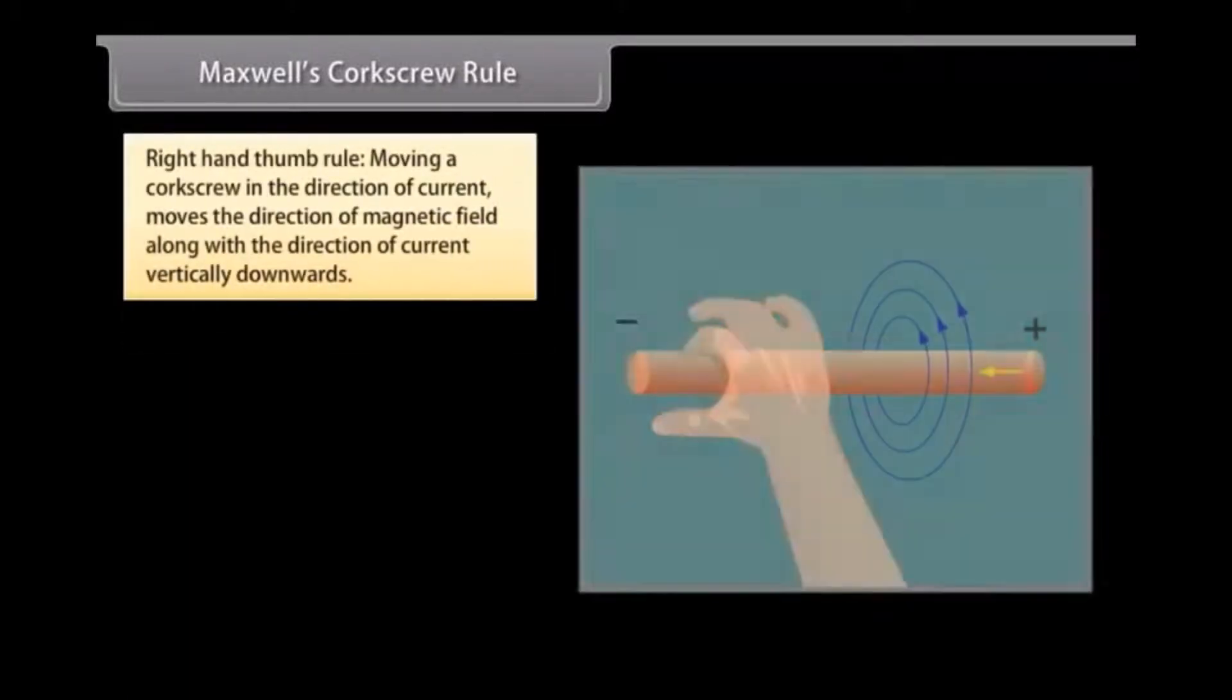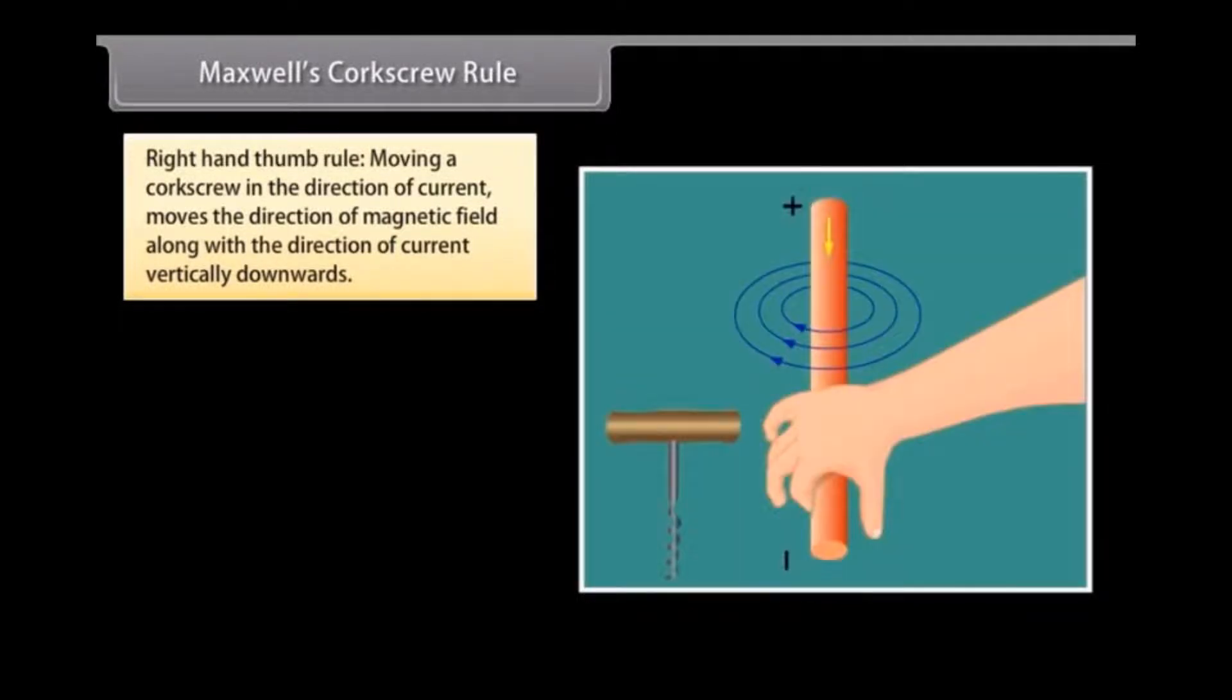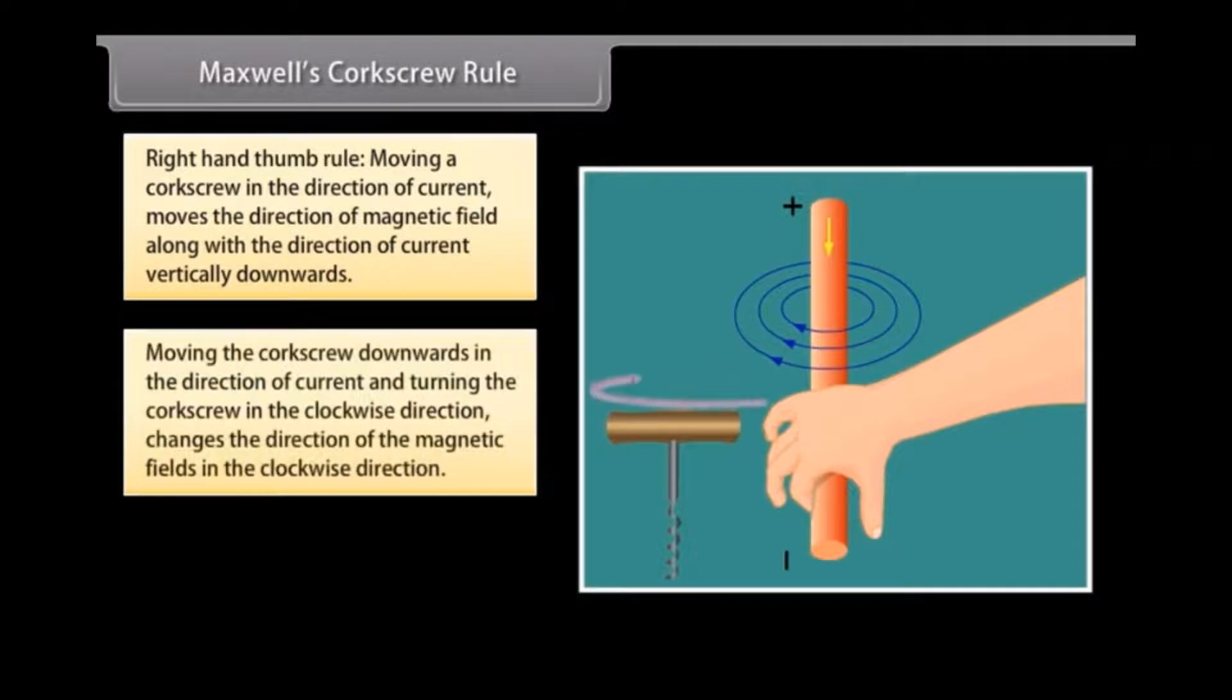Maxwell's Cork Screw Rule. Maxwell's Cork Screw Rule, also known as Right Hand Thumb Rule, defines that moving a corkscrew in the direction of current moves the direction of magnetic field along with the direction of current vertically downwards. If we move the corkscrew downwards in the direction of current and the handle of corkscrew is turned in the clockwise direction, then the direction of the magnetic fields is in the clockwise direction.